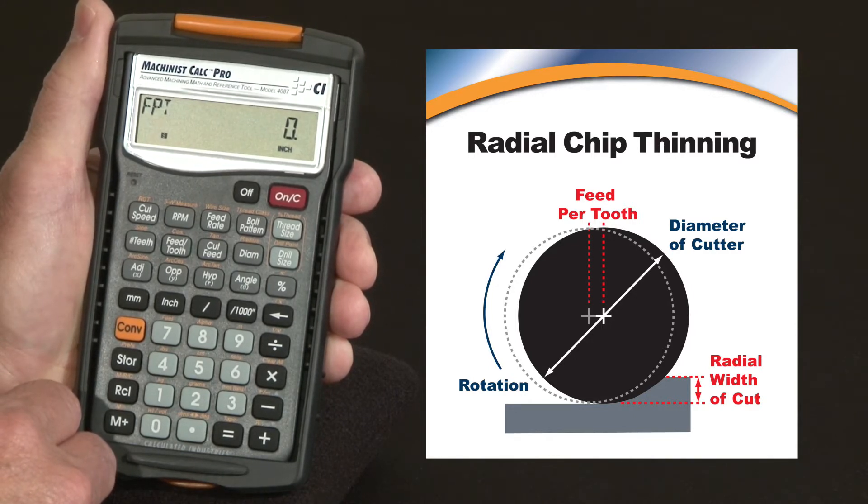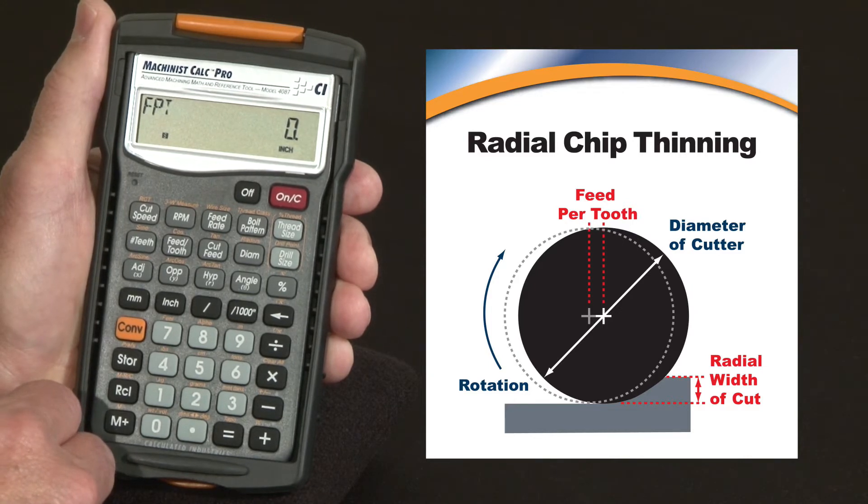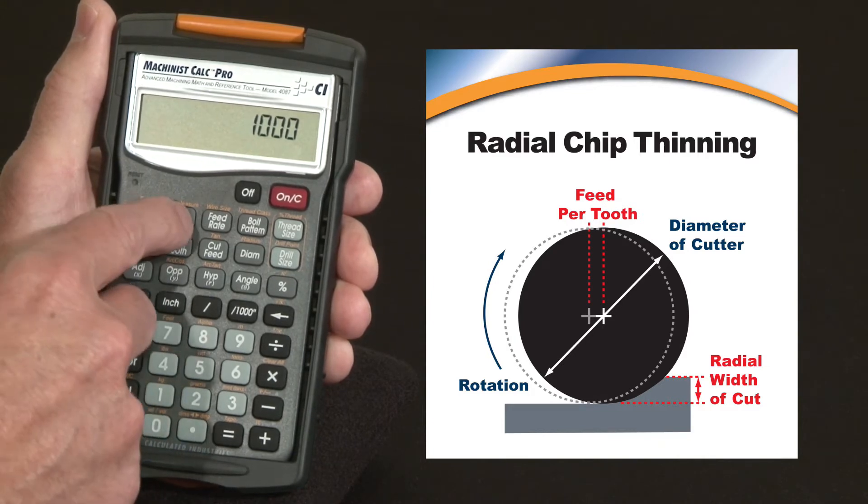Let me give you a quick example. Say the data sheet for the material you're working on says you should run this material at 1000 RPM.